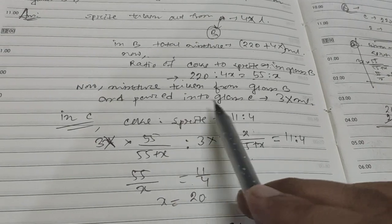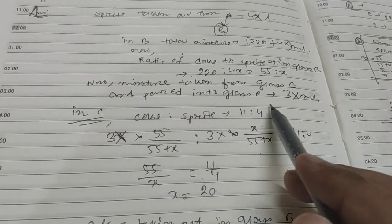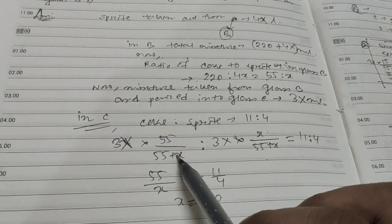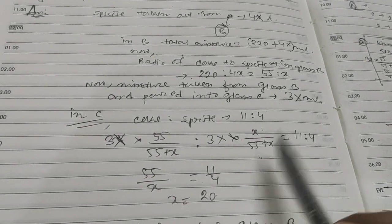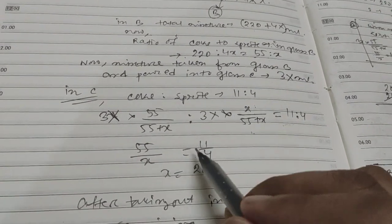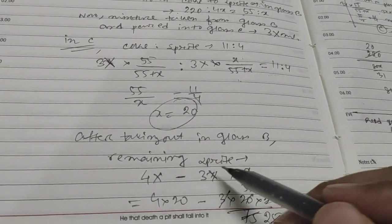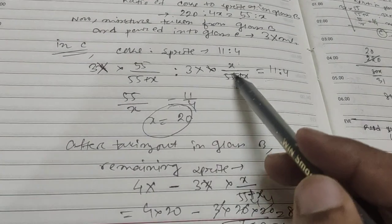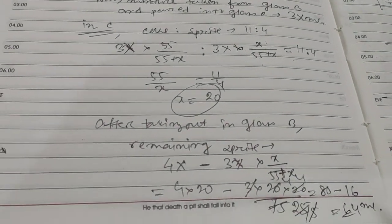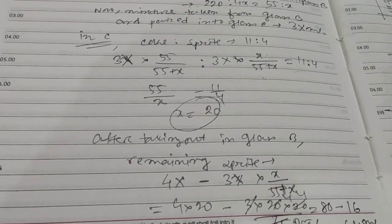Now mixture taken out from glass B and poured into glass C is 3x. In this 3x I check how much coke and sprite is there, as the coke to sprite ratio is 11:4. So I calculated the value of x, and then the remaining sprite is initially 4x minus this one. Put the value of x and you'll get 64.